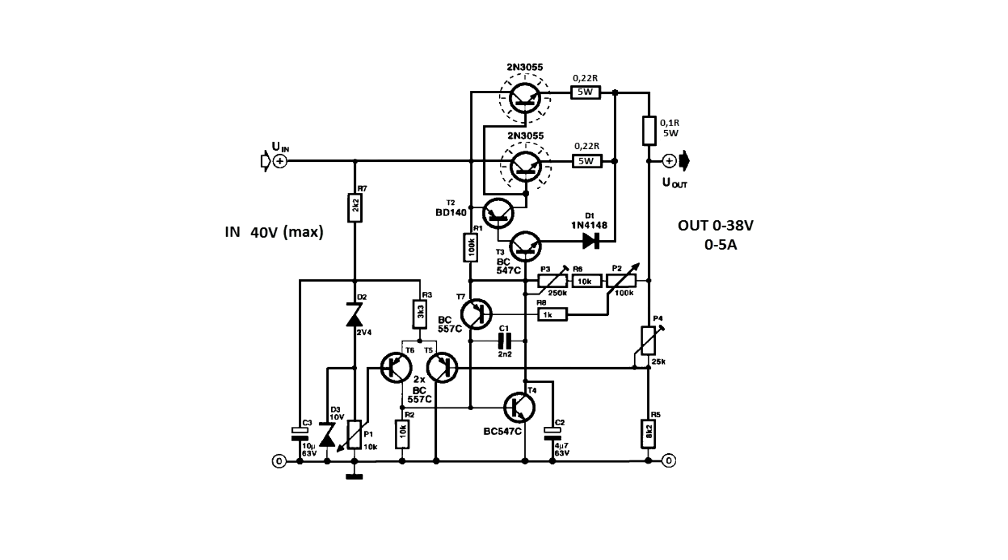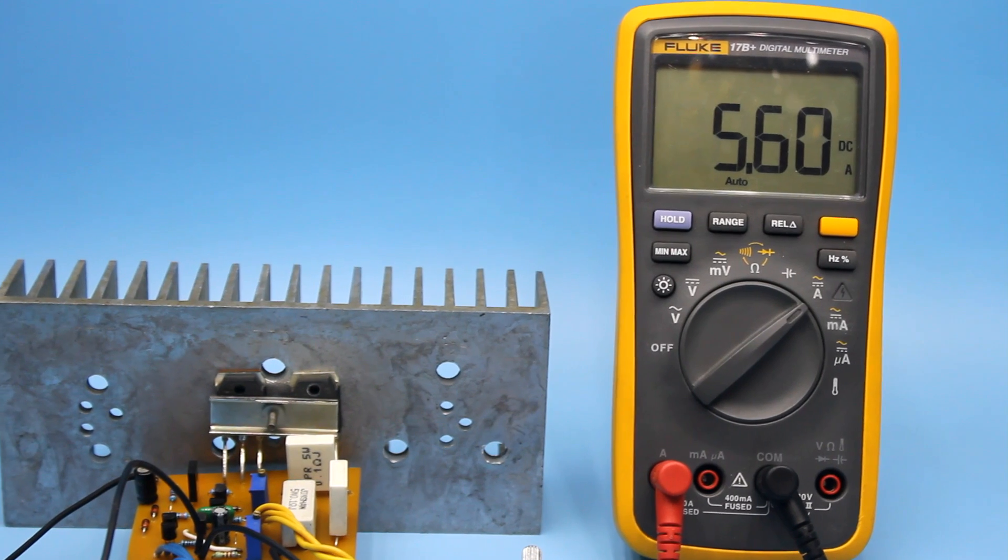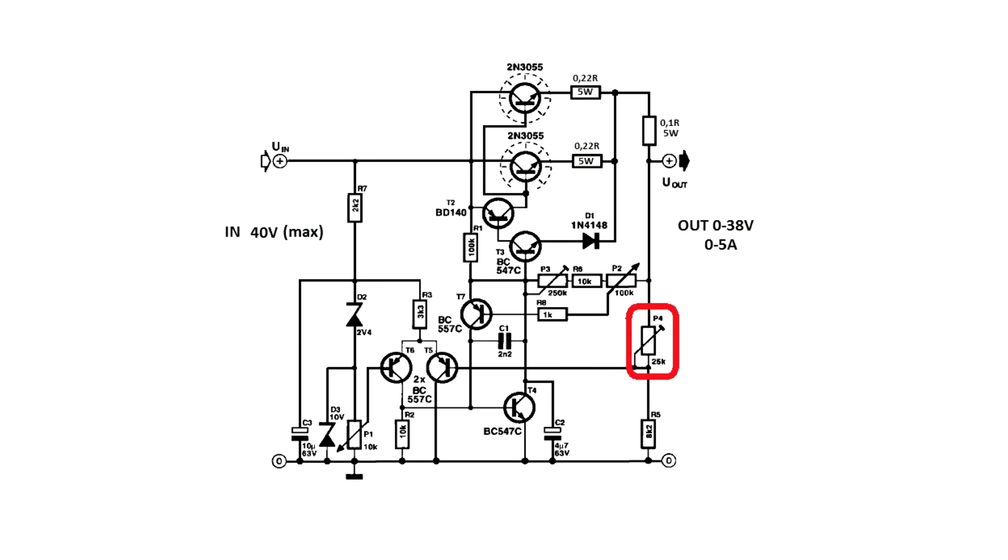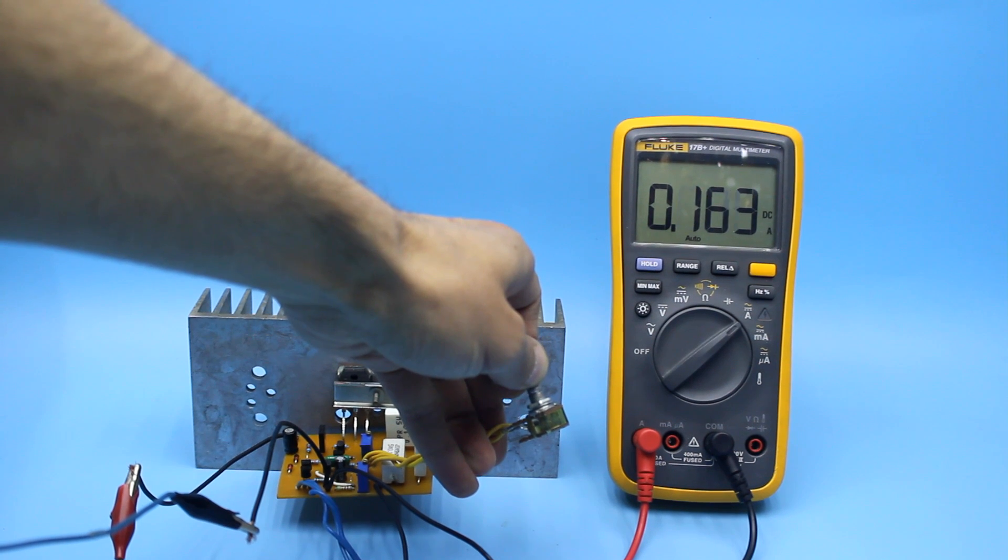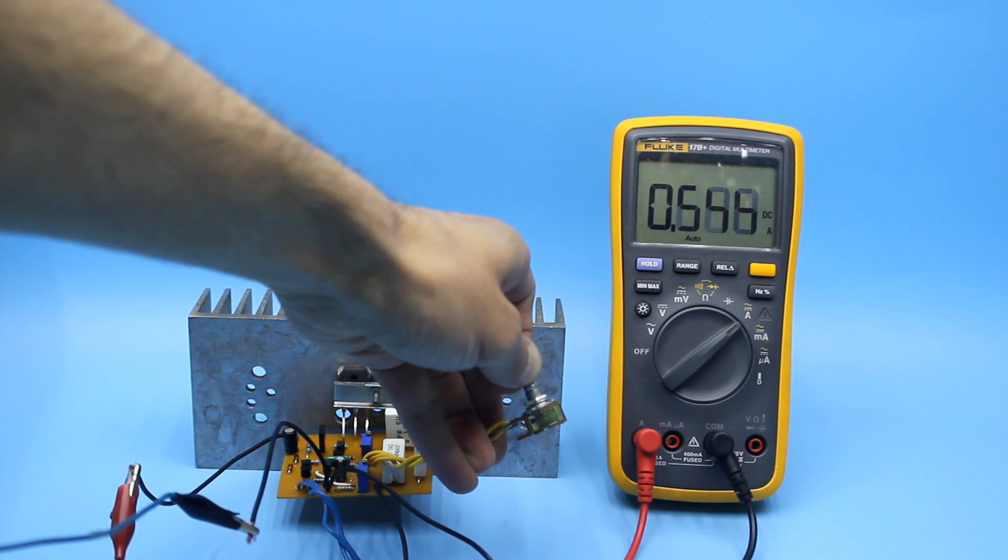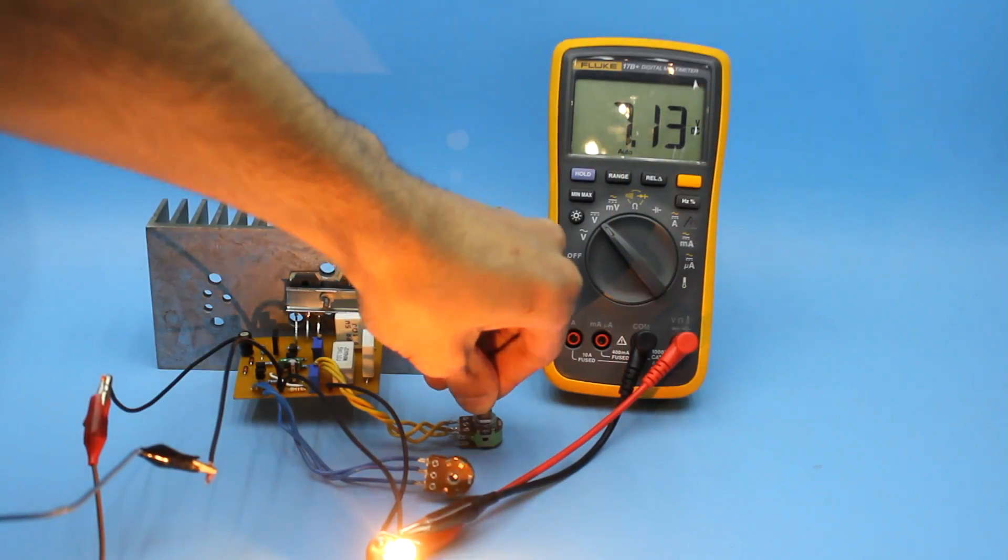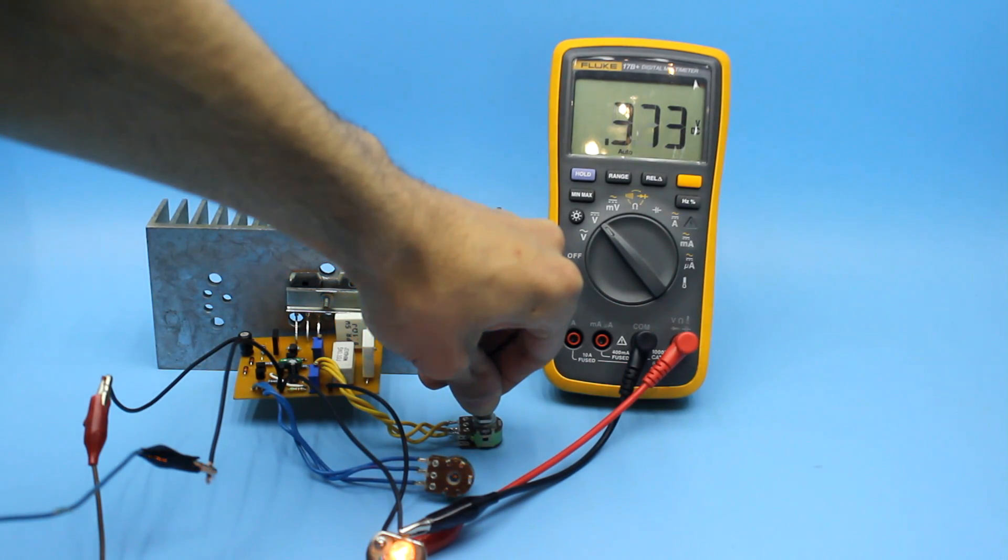After power is applied to the stabilizer circuit, it is necessary to set the maximum output current by turning the trimmer resistor. Next, set the maximum output voltage. It all depends on what kind of power source you have, what are the output current and voltage values. That is, this stabilizer can be adjusted without any problems for any power supply.